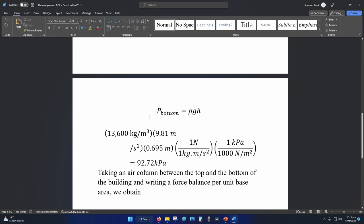Next you find the bottom pressure. Once again rho GH. Gravity and density is the same. Height is the difference. So 0.695. You'll get 92.72 kPa.